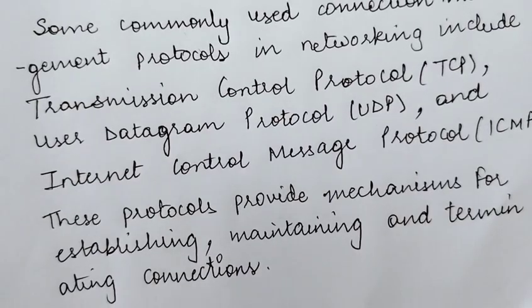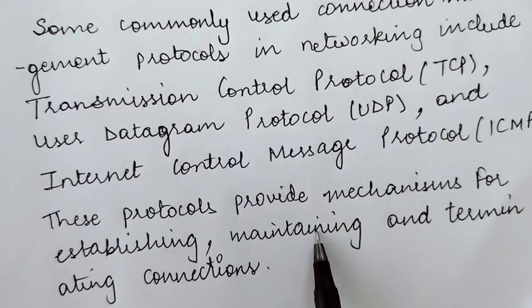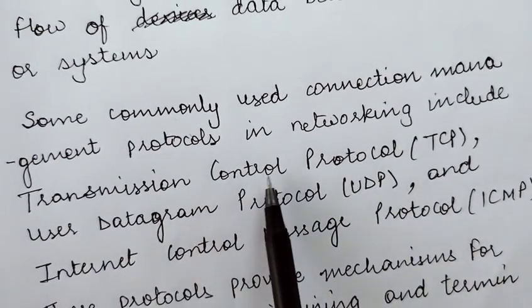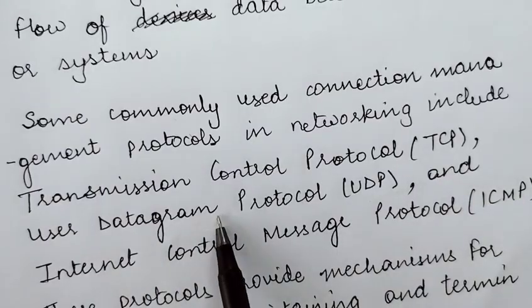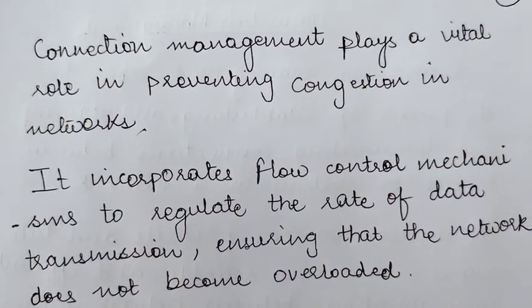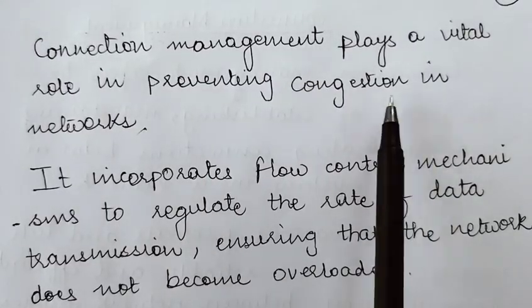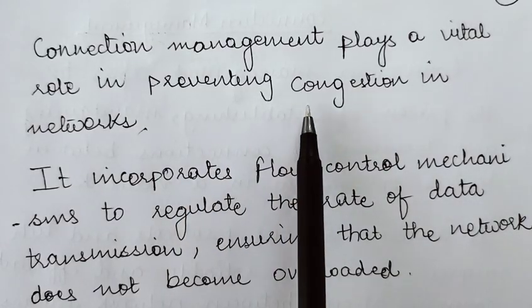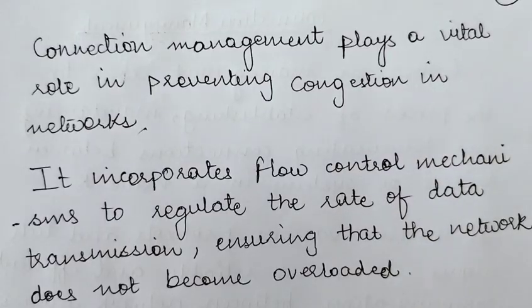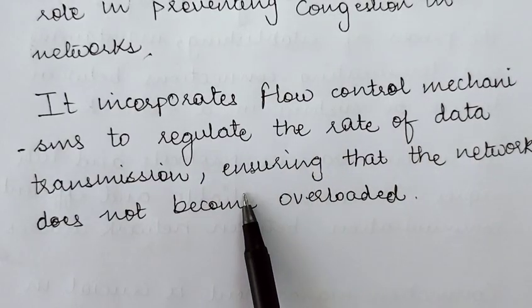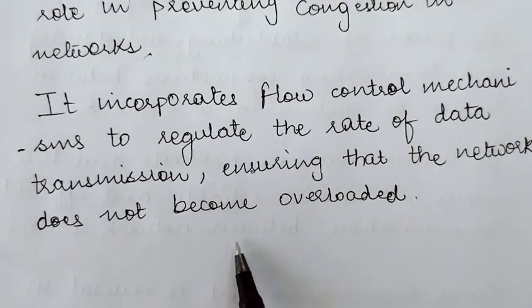Whatever mechanisms are required to establish, maintain, and terminate a connection are provided by these three major protocols: TCP, UDP, and ICMP. Connection management also plays a vital role in preventing congestion in the network. Once a dedicated connection has been established, it prevents any kind of congestion and incorporates flow control mechanisms to regulate the rate of data transmission, ensuring the network does not become overloaded.